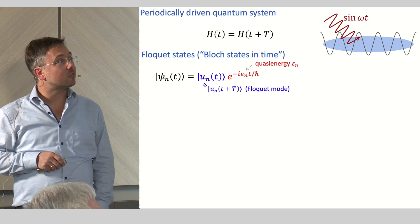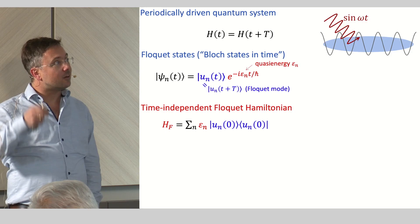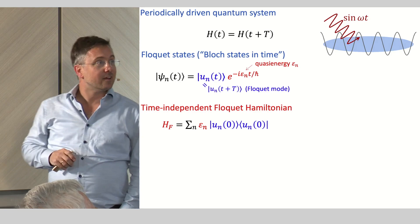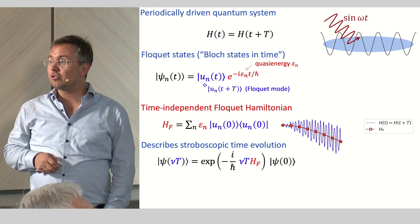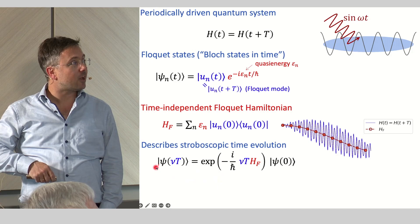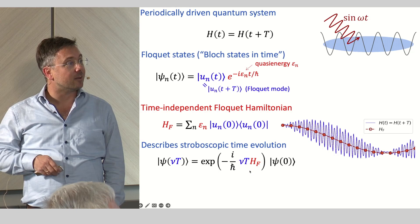Then we have a quasi-energy, which is a real number dictating with which speed a linear phase of this state evolves in time. Now you can construct a time-independent Floquet Hamiltonian. This time-independent Floquet Hamiltonian is constructed such that it describes the time evolution of the system in stroboscopic steps of the driving amplitude. If you look stroboscopically at the system at integer multiples of capital T, it will look as if the dynamics was generated by this time-independent Floquet Hamiltonian.